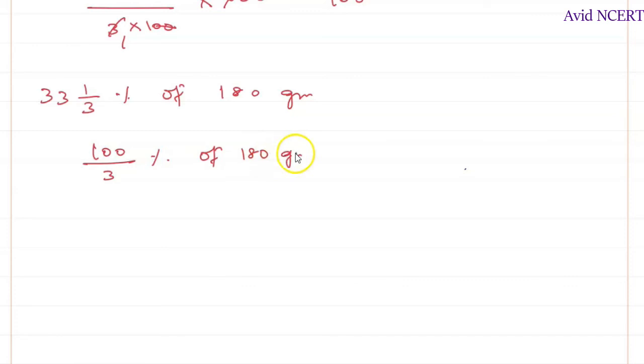Same thing again. When it is said as percentage, you divide by 100. This is 100 by 3 times 100, of is multiplied with 180. So 100, 100 gets cancelled. 3 times 1 and 3 times 60 is 180. The zero goes here, which is 60.